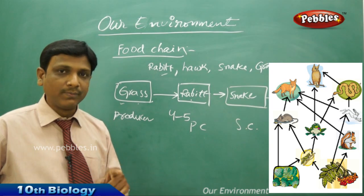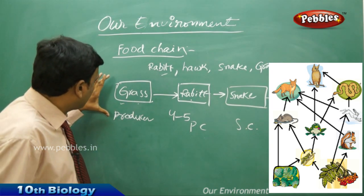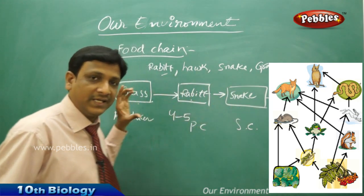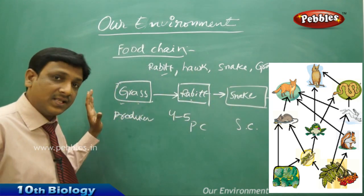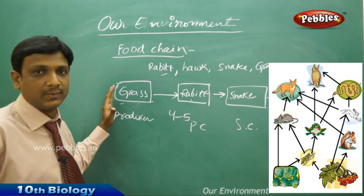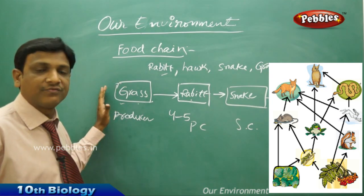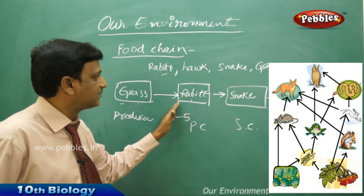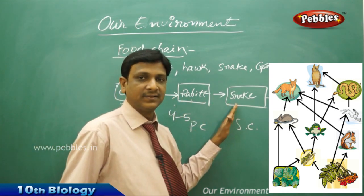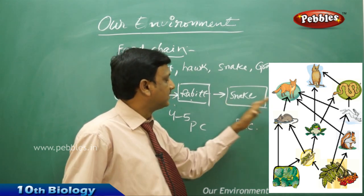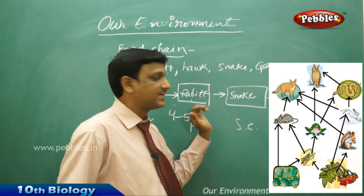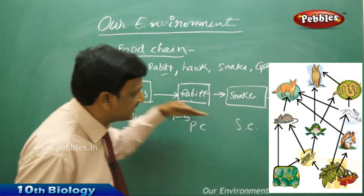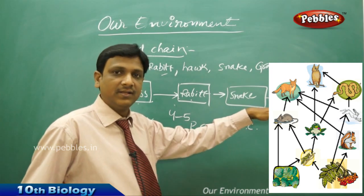One more important observation: the organisms at the beginning of the food chain will be large in number. You see a lot of grass compared to the number of rabbits. The number of rabbits is always more than the number of snakes, and the number of hawks is always less than the number of snakes. So the number of organisms decreases as we proceed forward in the food chain.